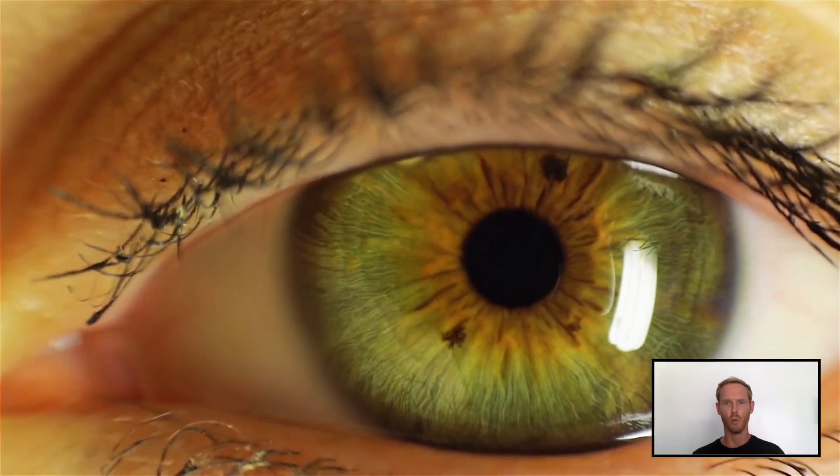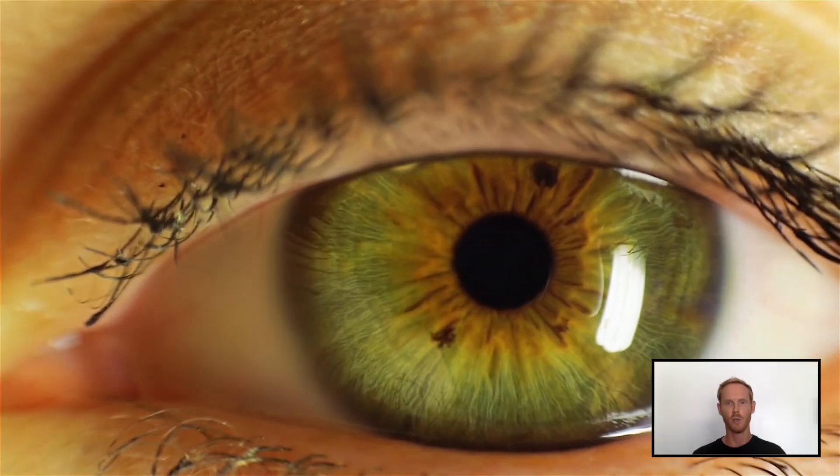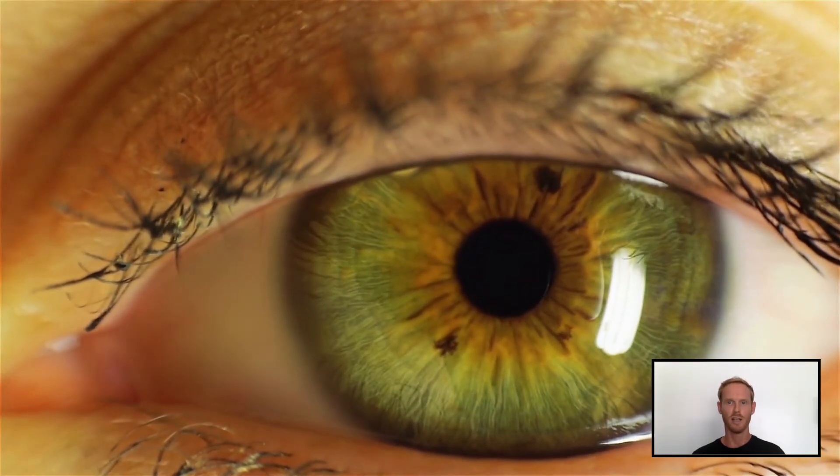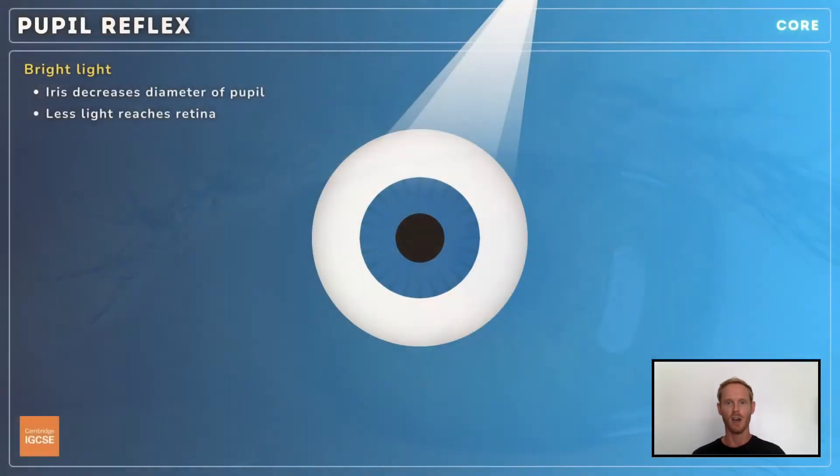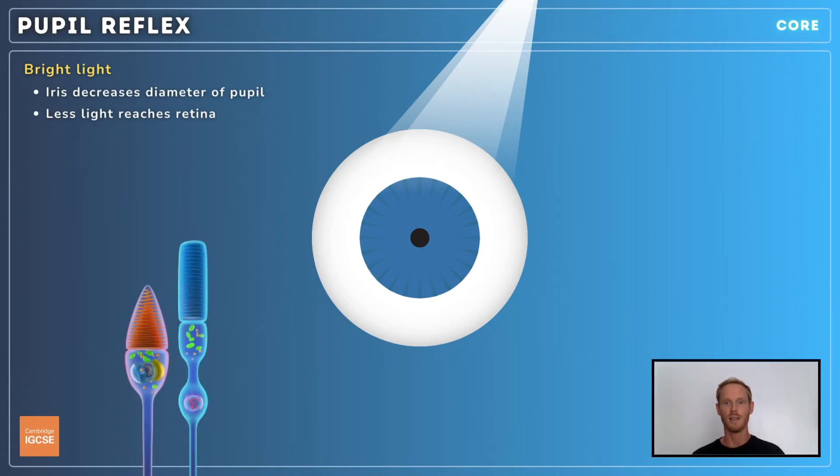Next, you need to understand the pupil reflex. The diameter of the pupil changes when exposed to light of different intensities. When the eye is exposed to bright light, the muscles of the iris respond by constricting or reducing the diameter of the pupil. This means that less light is able to enter the eye, which protects the light-sensitive cells of the retina from damage.